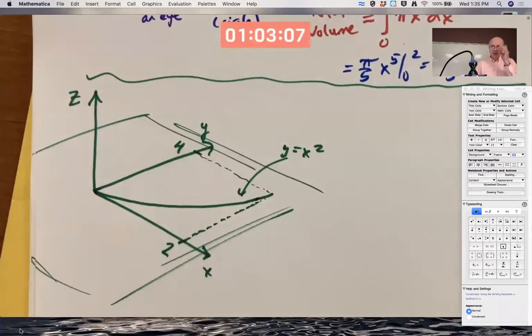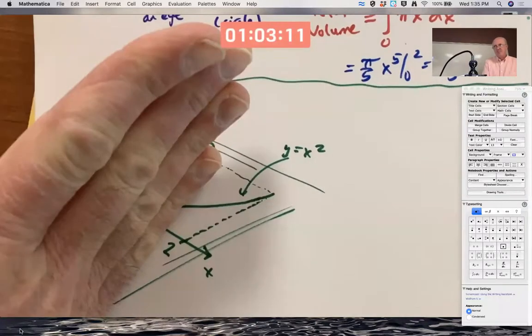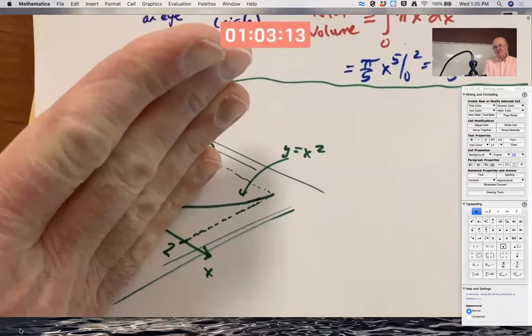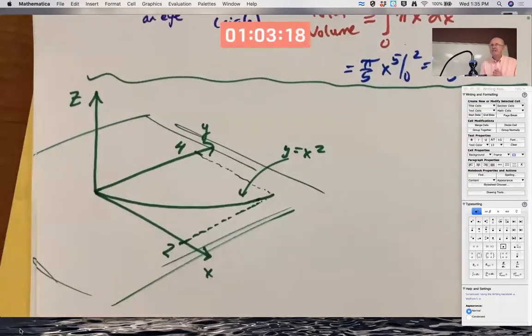And the solid is shaped in such a way that if I slice that region with a knife perpendicular to the X-axis, that the slices, if I look at them head-on, will look like squares. The cross-sections will be squares.